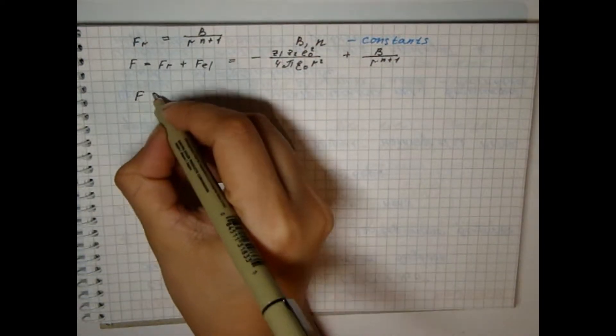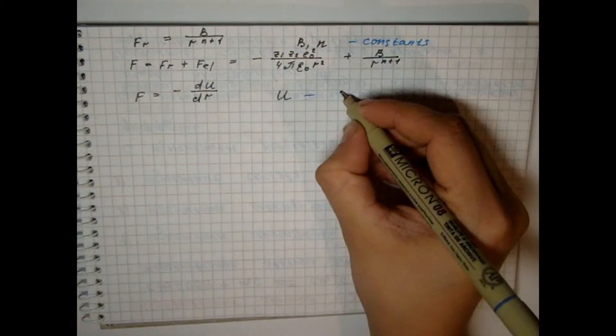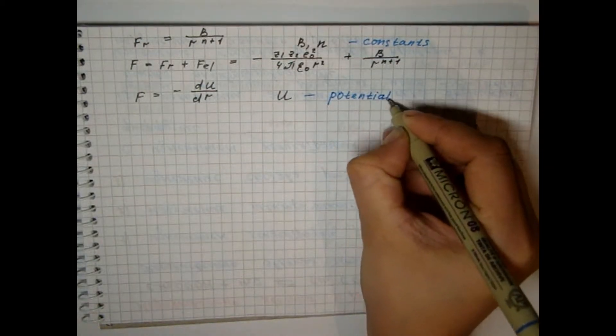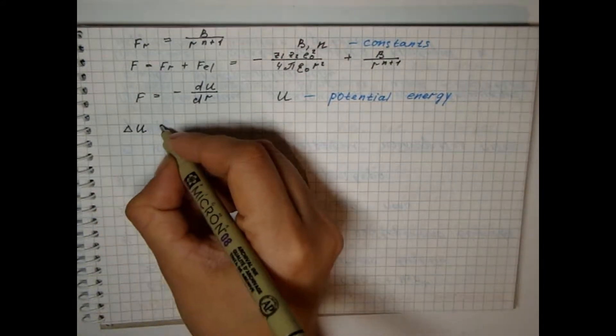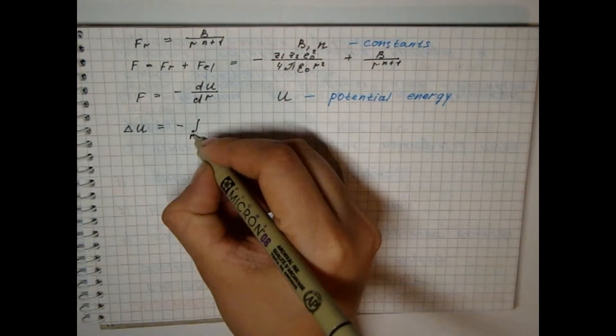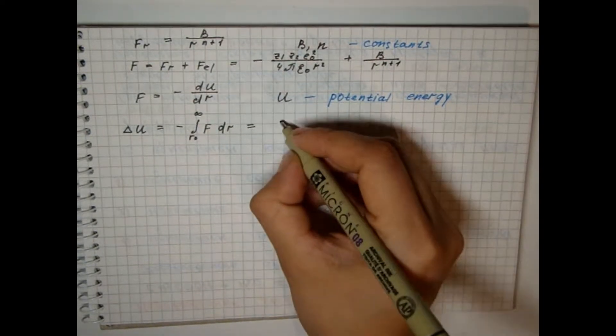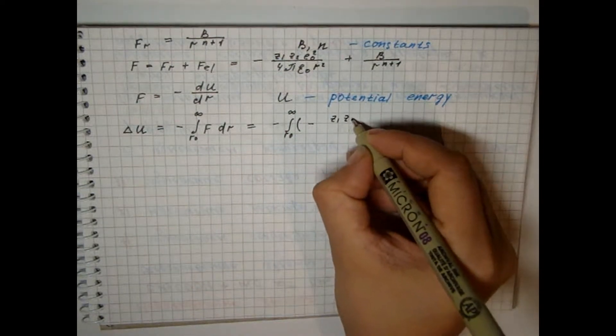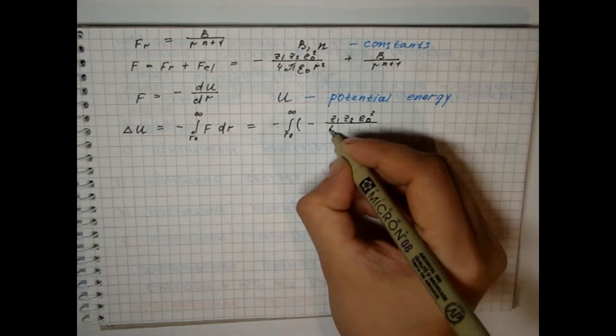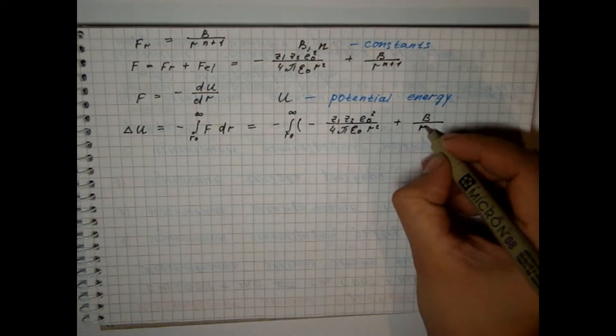By definition, therefore, integrating the value of f from the equilibrium distance between the ions of the crystal lattice to infinity, we find the change in potential energy, which will correspond to the removal of two conceded ions at an infinitely large distance.